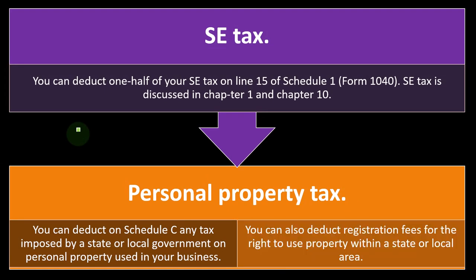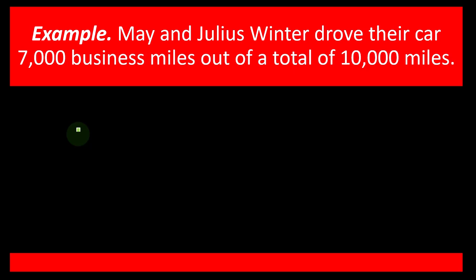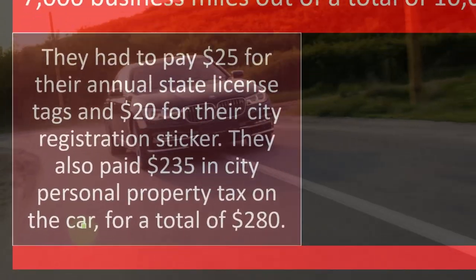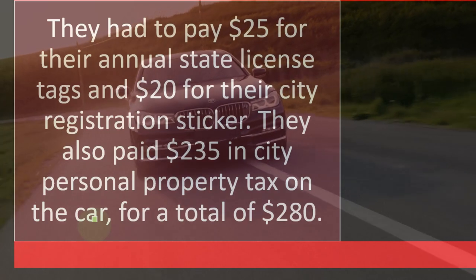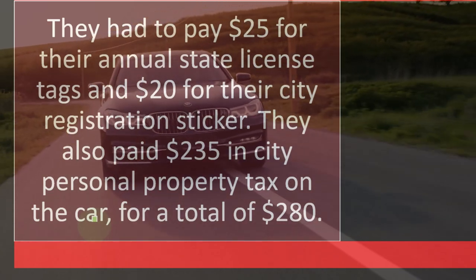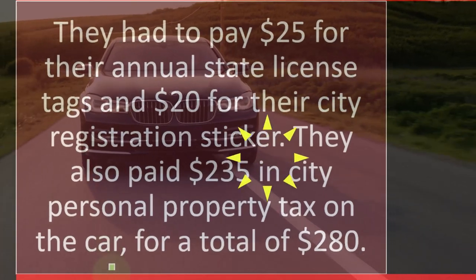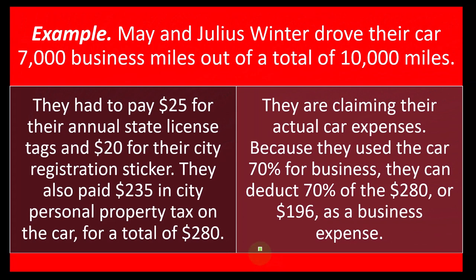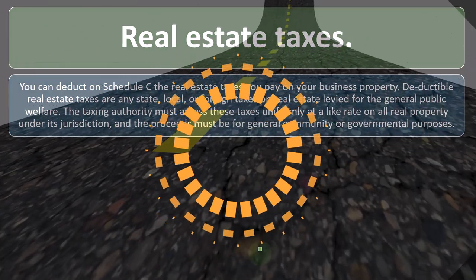For example, May and Julius Winter drove their car 7,000 miles out of a total of 10,000 miles. They paid $25 for their annual state license tax, $20 for their city registration sticker, and $235 in city personal property tax on the car — a total of $280. Since they are claiming actual car expenses and used the car 70% for business, they can deduct 70% of $280, or $196, as a business expense.